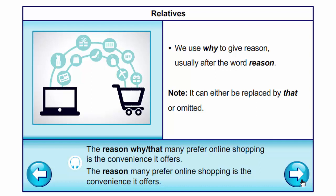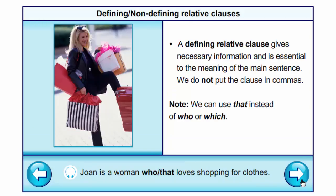A defining relative clause gives necessary information and is essential to the meaning of the main sentence. We do not put the clause in commas. We can use that instead of who or which. Joan is a woman who loves shopping for clothes.